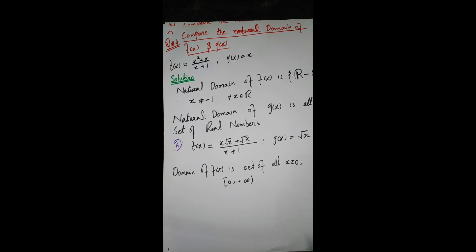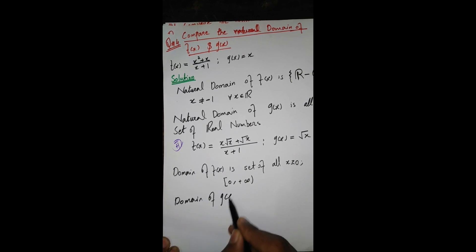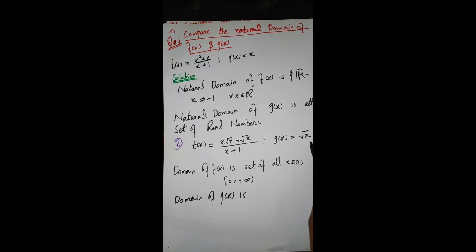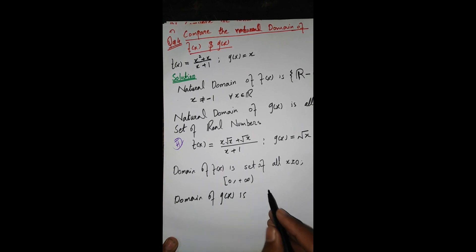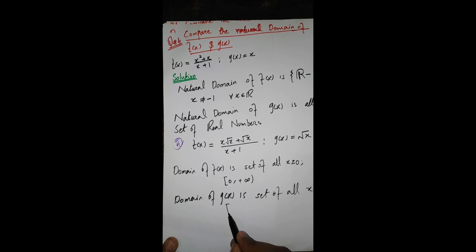For g(x) = √x, there is no fraction term — only a radical sign. We cannot allow negative numbers under the radical sign, as that would give a complex number. So the domain of g(x) is also all x ≥ 0, which is the same as the domain of f(x). Therefore, the domains of f(x) and g(x) are equal.